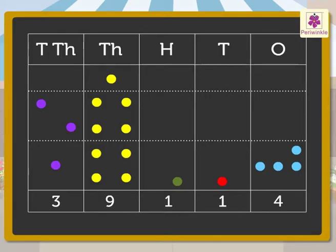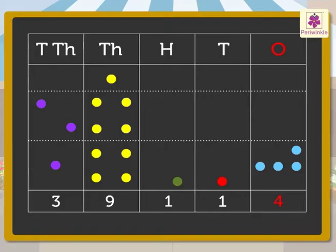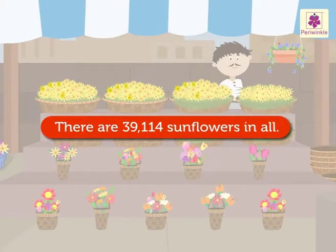Finally, we get in all three ten-thousands, nine thousands, one hundred, one ten, and four ones, which means thirty-nine thousand one hundred fourteen. Thus, there are thirty-nine thousand one hundred fourteen sunflowers in all.